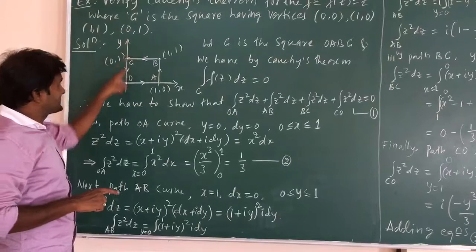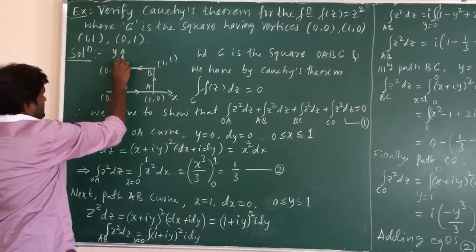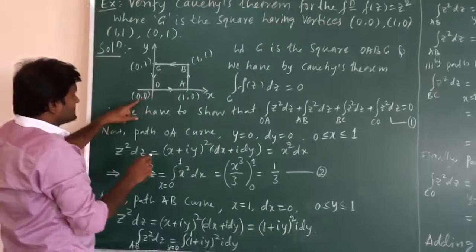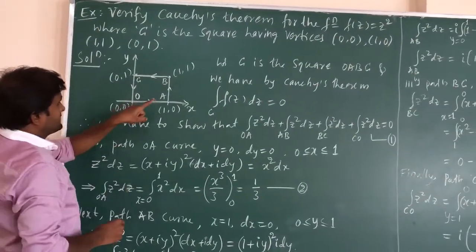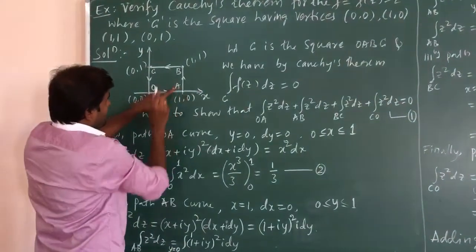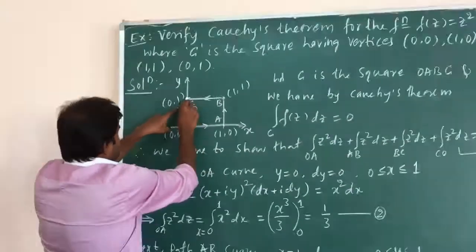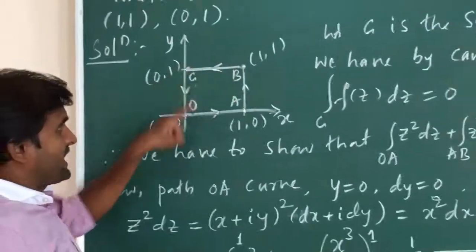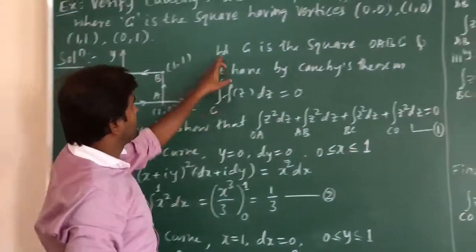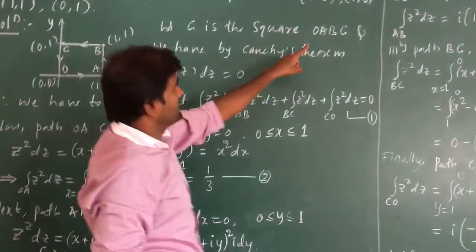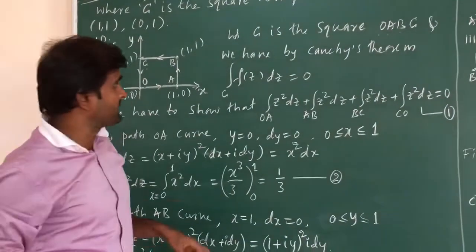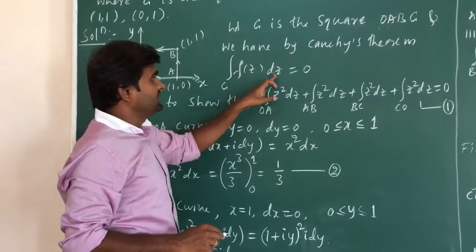I am representing this in the x-y plane. We have the x-axis and y-axis. The origin is (0,0), which I am calling O. Then (1,0) is point A, (1,1) is point B, and (0,1) is point C. So we have a square O, A, B, C. The path C is the square O, A, B, C. By Cauchy's theorem, the integral along path C of f(z) dz equals 0.